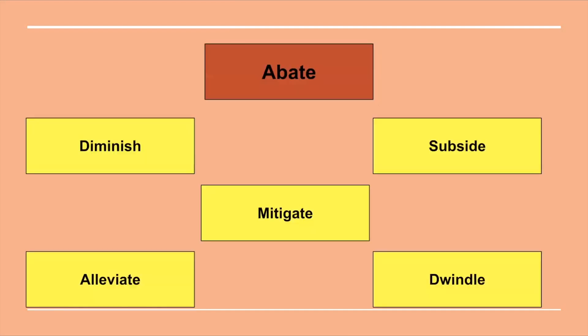So let's recap all the words we learned. We started with abate, which means to decrease or reduce over time. We also have five other words with similar meanings: diminish, subside, mitigate, alleviate, and dwindle. All of them more or less mean the same thing — to be less severe, less intense, decrease in effect, and so on. Thank you for listening. Please subscribe to my channel, and see you in the next lesson. Thank you.